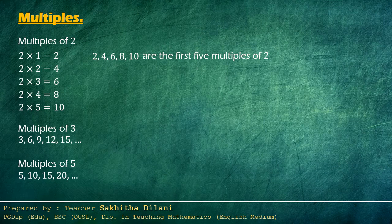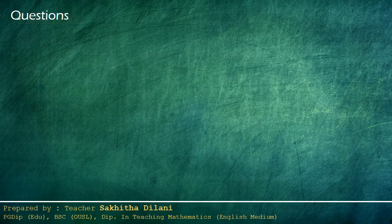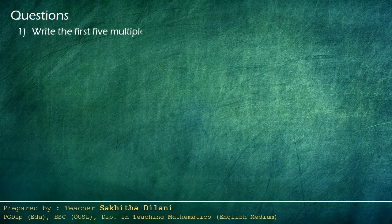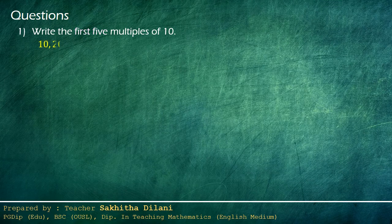Now let's write answers for some questions. First one: write the first five multiples of ten. You are asked to write the first five multiples. They are ten, twenty, thirty, forty and fifty.